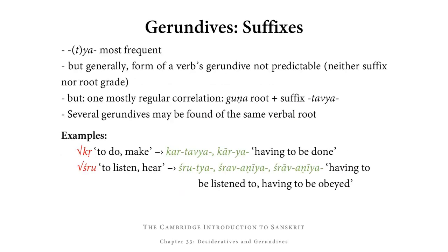Among the three gerundive suffixes, ya and its alternative form tya are the most frequent. But in general, the form of the gerundive of a verb cannot be predicted — neither the suffix nor the root grade. There is one mostly regular correlation: in front of the suffix tavya, we typically find the verbal root in guṇa. But we cannot predict whether a particular verbal root is going to use the suffix tavya.